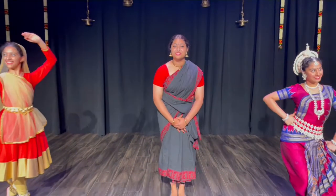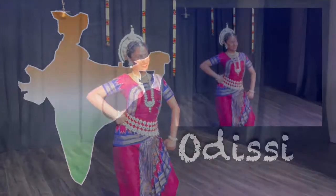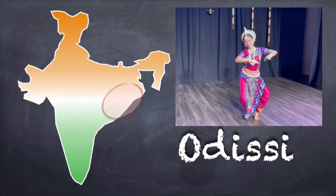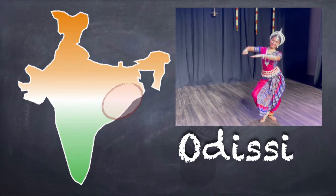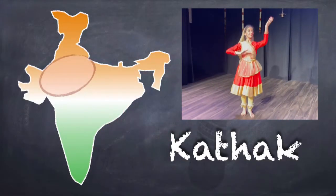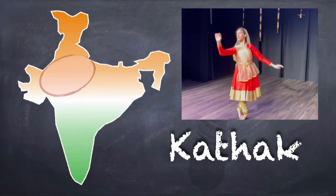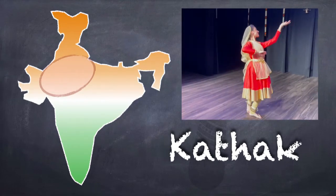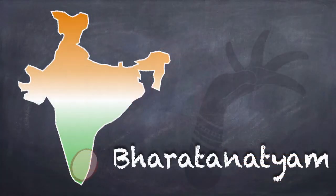Meet my friends Aru and Crystal who will be joining us today. Crystal learns a form of Indian classical dance called Odesi, which comes from the eastern part of India. Aru learns a different form called Kathak, which comes from the northern and western part of India. And I learned Bharatanatyam, an Indian classical dance form from southern India.